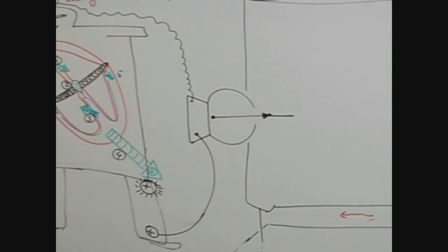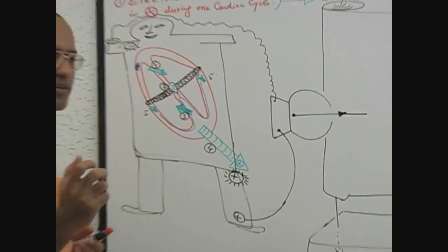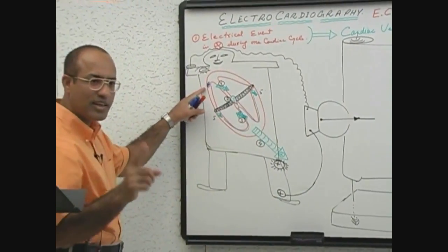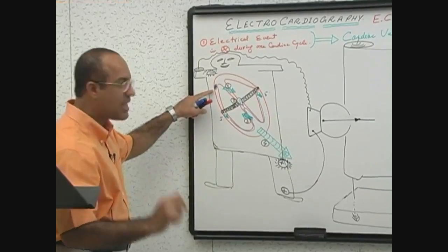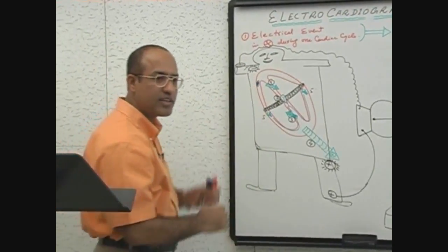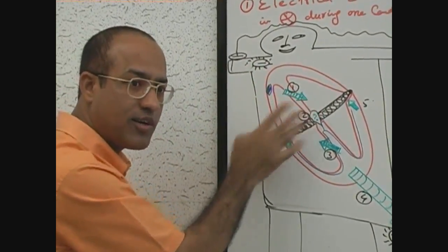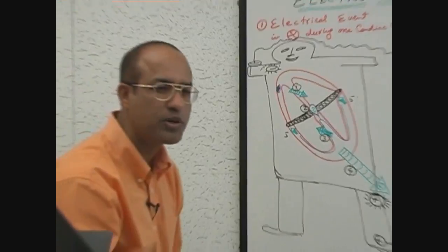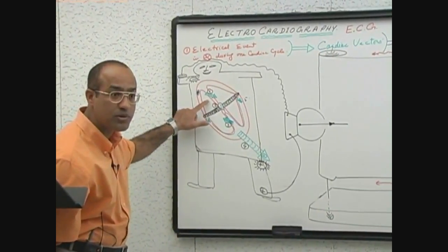The sinoatrial node fires, and the first electrical events start — that is the spreading of depolarization on the atria. This produces the atrial vector.